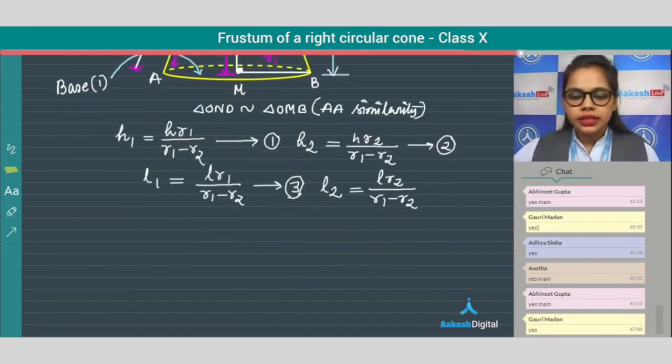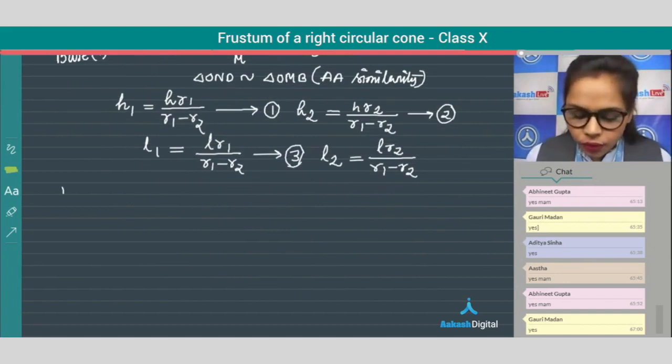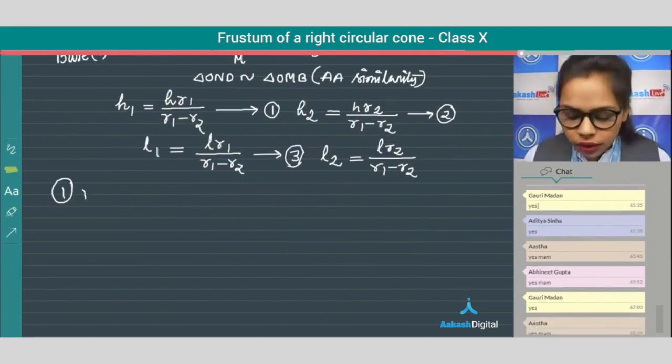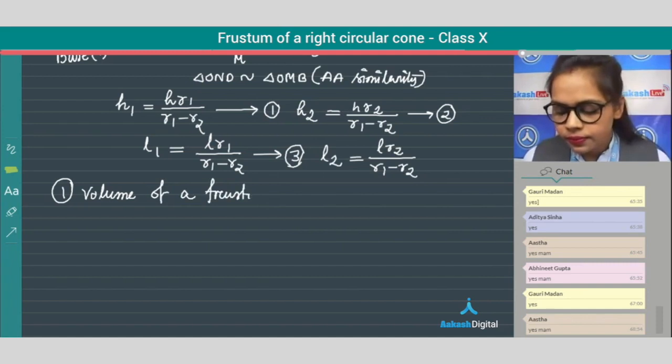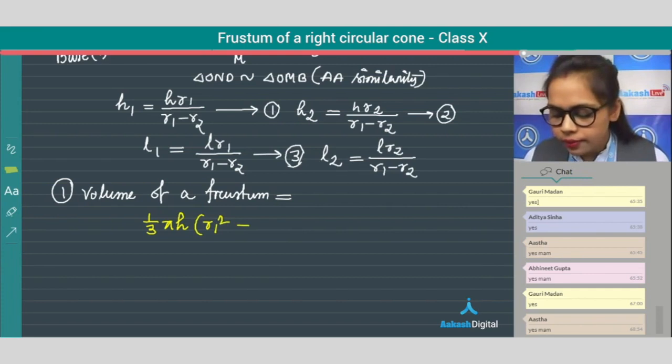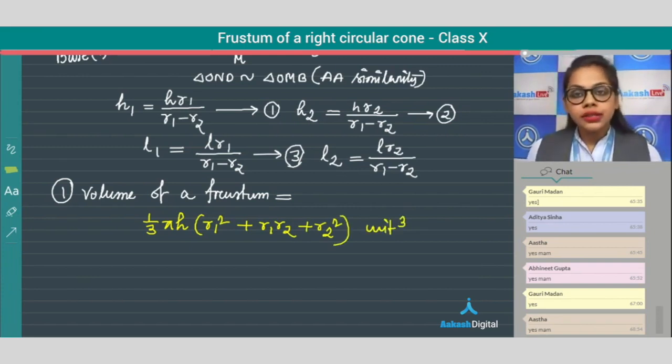I hope this part is very clear to all of you. Now the first formula of frustum we can write down: volume. The formula is one-third pi h in a bracket r1 square plus r1 r2 plus r2 square unit cube, and we got the relation, we got the formula from equation 1 and equation 2.